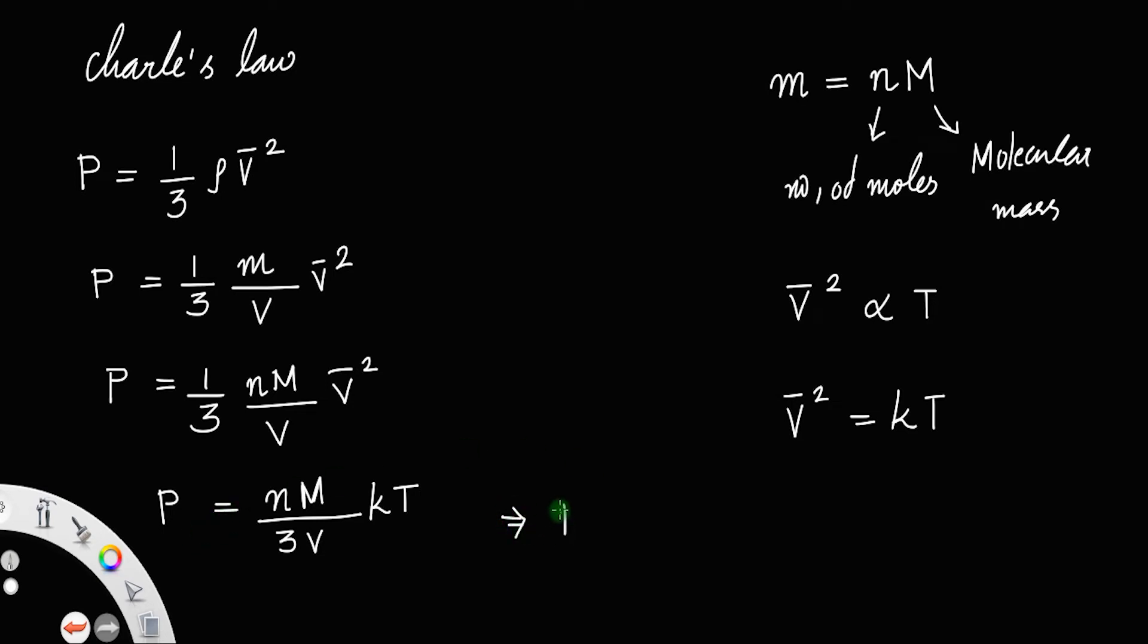This again is P is equal to, or you can take this V to the left and P to the right. So V is equal to nM divided by, nMk divided by 3P into T.